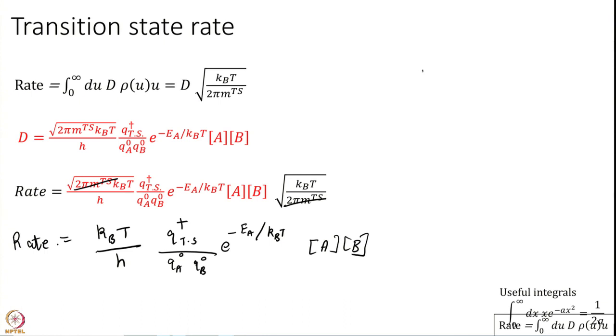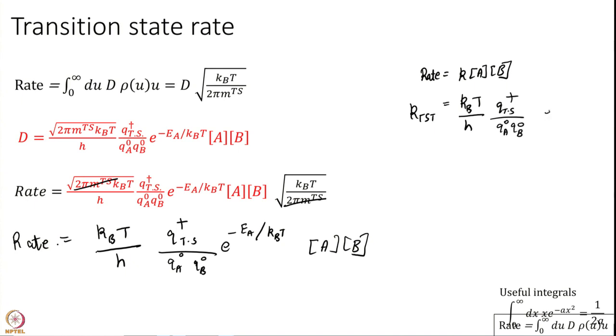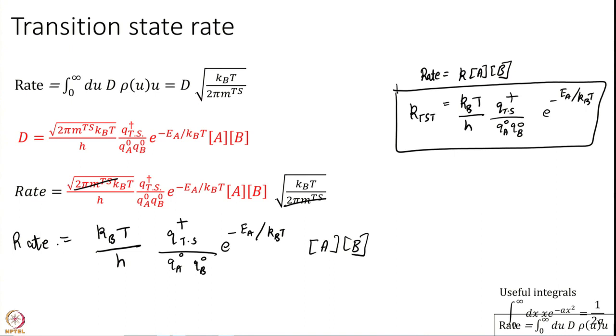Comparing to the phenomenological expression rate = k [A][B], the rate constant is k = (k_B T / h) × (Q_TS^‡ / Q_A^0 Q_B^0) × e^(-E_A / k_B T). This is the very famous transition state theory rate expression, and now you know its full derivation. This expression is extremely popular — you can pick up almost any journal in physical chemistry and find at least one article using this formula. Whenever a new study begins and you need to estimate rates, this is the formula used for the first estimate.